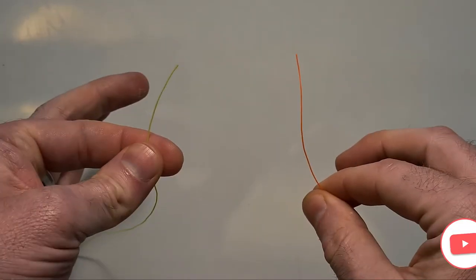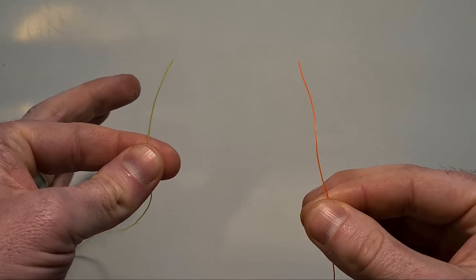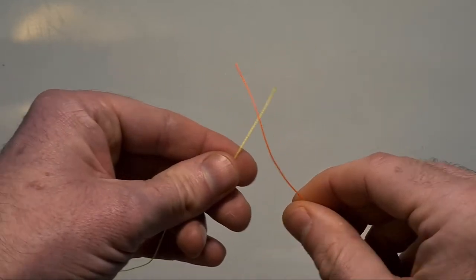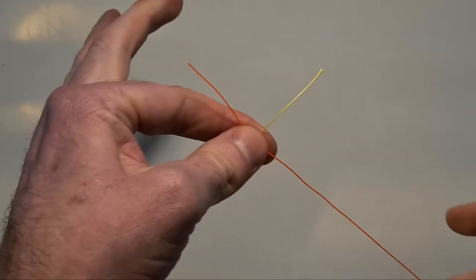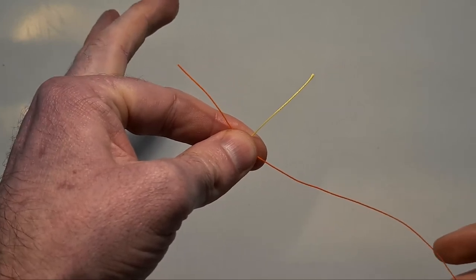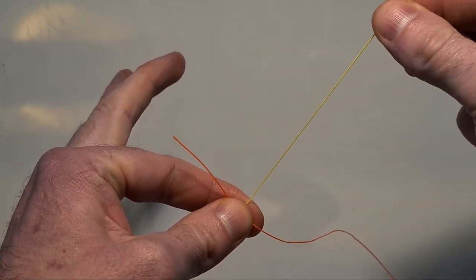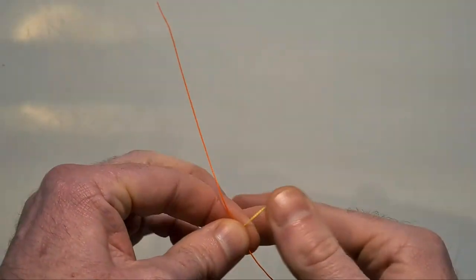As a blood knot is to attach two lines, we're going to start with two lines today, a nice yellow bit of backing and some nice orange backing. We're going to start by crossing these over and holding them in place with my forefinger and thumb. I'm then going to pull the tag lines out a bit to give myself about five or six inches to play with on both sides.